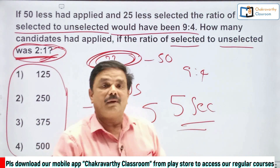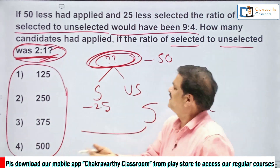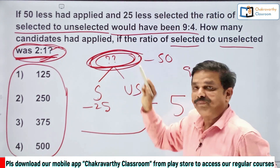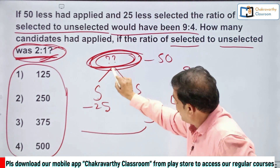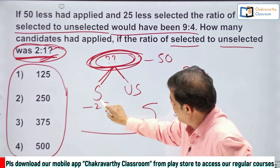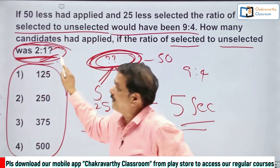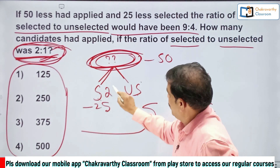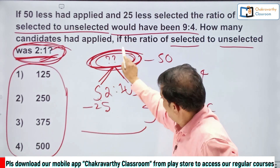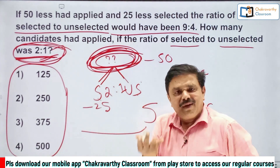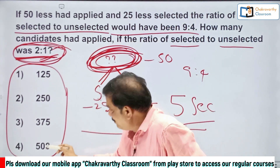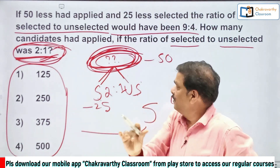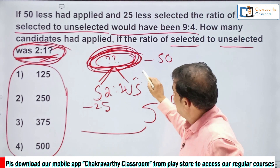By this time, some students must have understood. They want us to find out the total number, and there are only two categories: selected to unselected, with ratio 2:1. That number must be divisible by 2 plus 1, which is 3 — because the total is being divided into those two parts. Similarly, if the ratio were 4:5, the total must be divisible by 9.